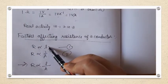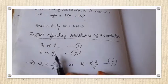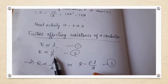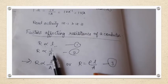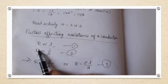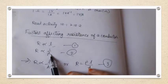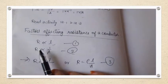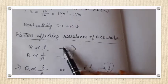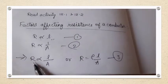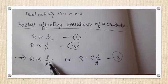Resistance is also inversely proportional to the area of cross-section. That means greater the area of cross-section, lesser is the resistance, and lesser the area of cross-section, greater is the resistance. Combining these two relationships, we can write R is proportional to L divided by A.